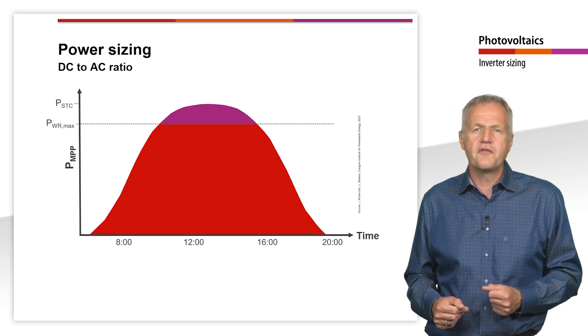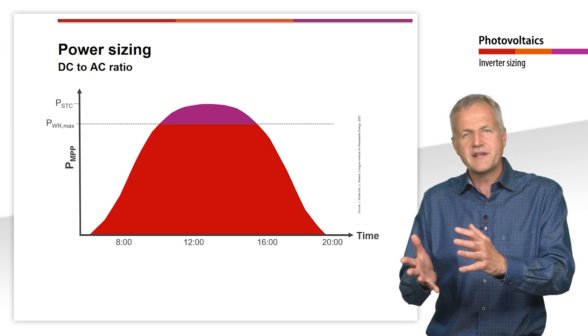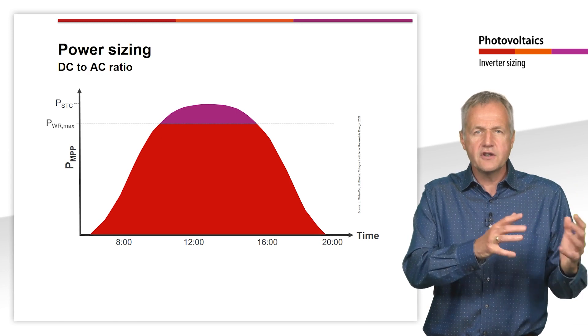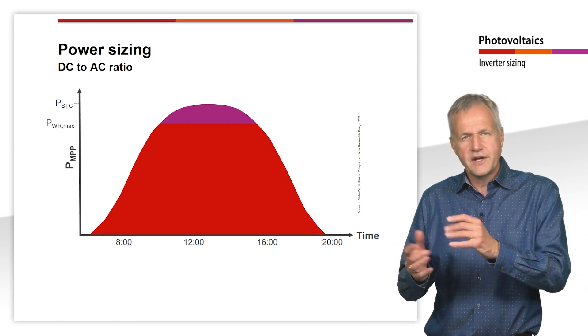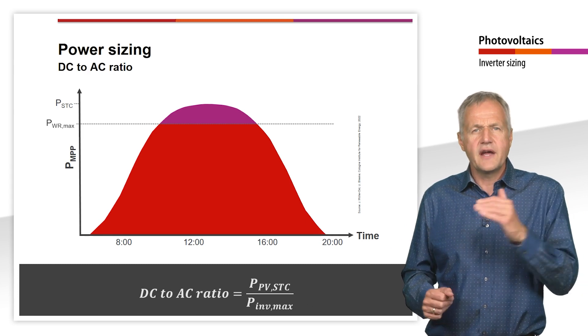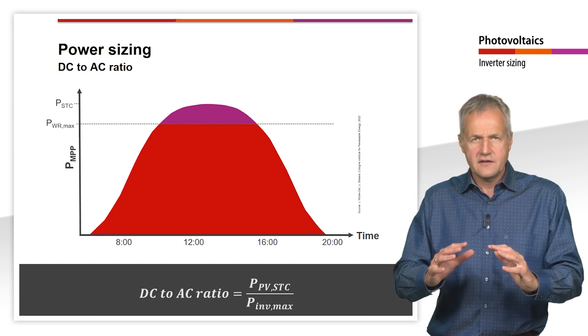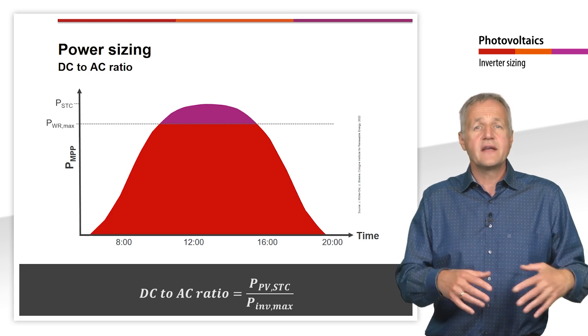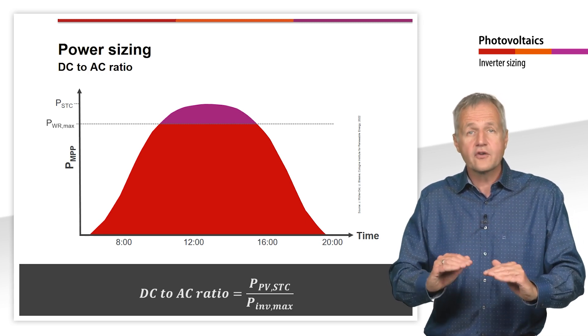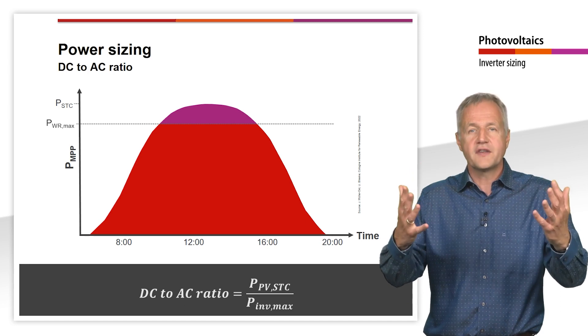The ratio of the nominal power of the solar generator to the inverter is also called the DC to AC ratio. For example, a DC to AC ratio greater than 1 corresponds to an undersized inverter, and a DC to AC ratio smaller than 1 corresponds to an oversized inverter.